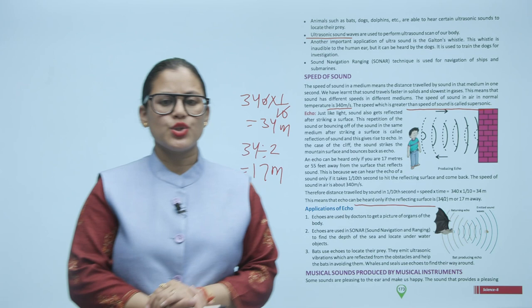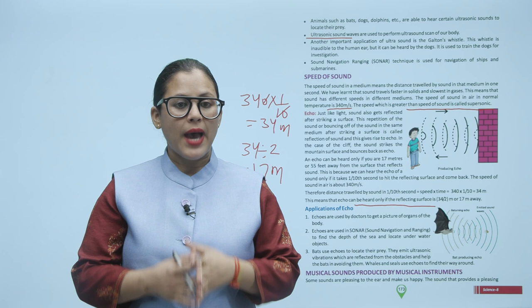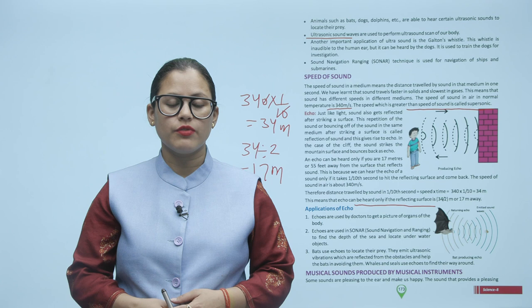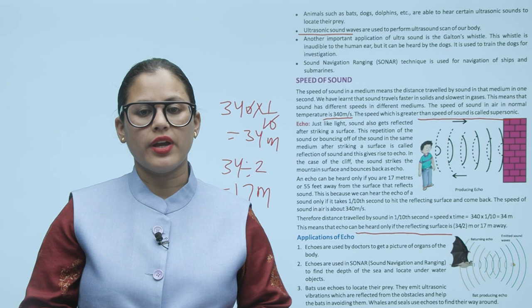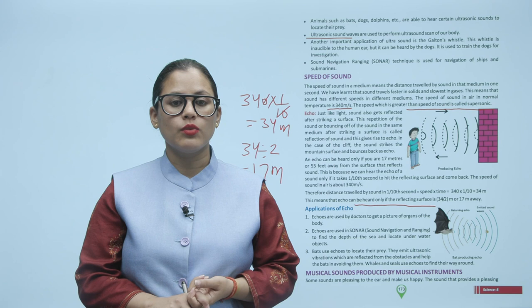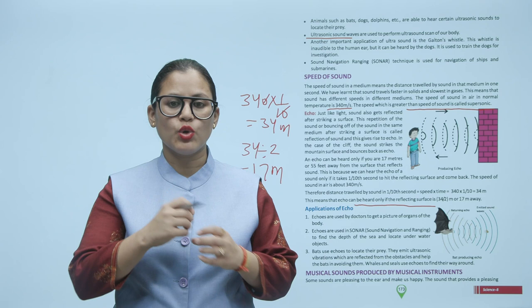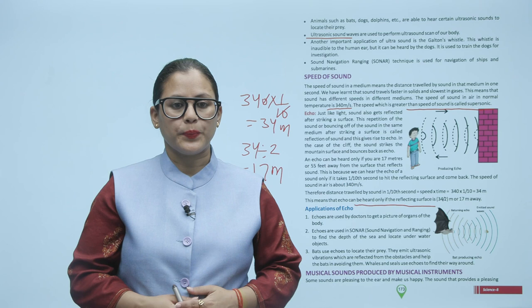Applications of echo. Echoes are used by doctors to get pictures of organs of the body. Echoes are used in sonar — sound navigation and ranging — to find the depth of the sea and locate underwater objects. Bats use echoes to locate their prey; they emit ultrasonic vibrations which are reflected from obstacles, helping the bats avoid them. Whales and seals also use echoes to find their way around.